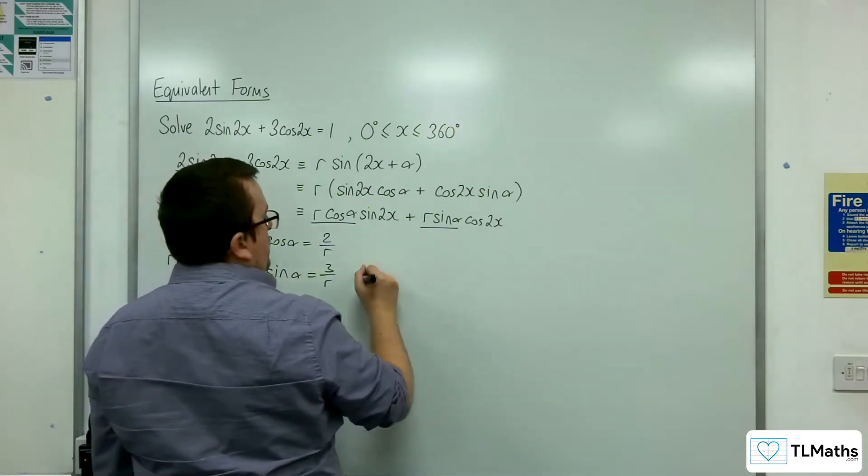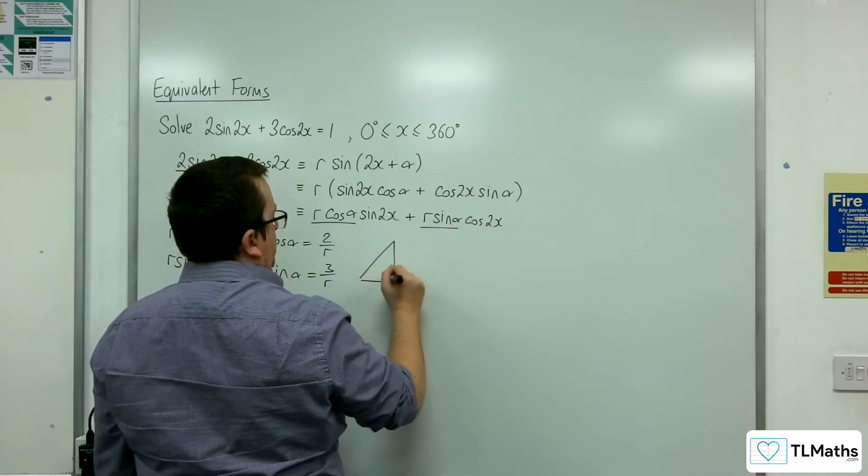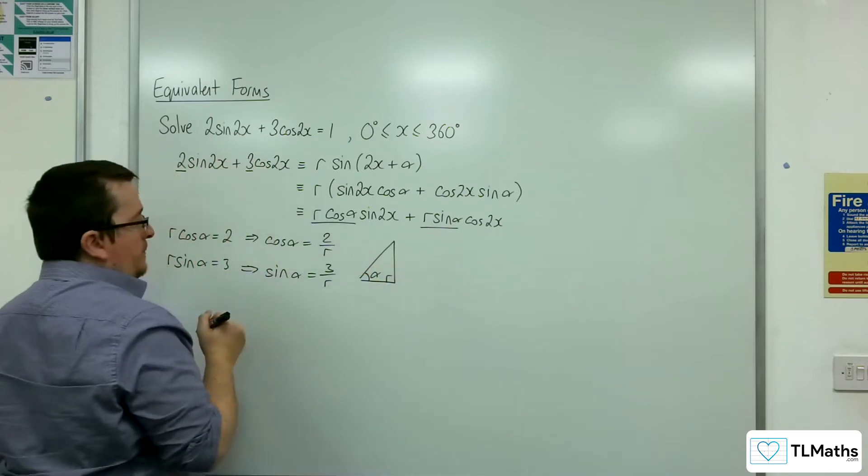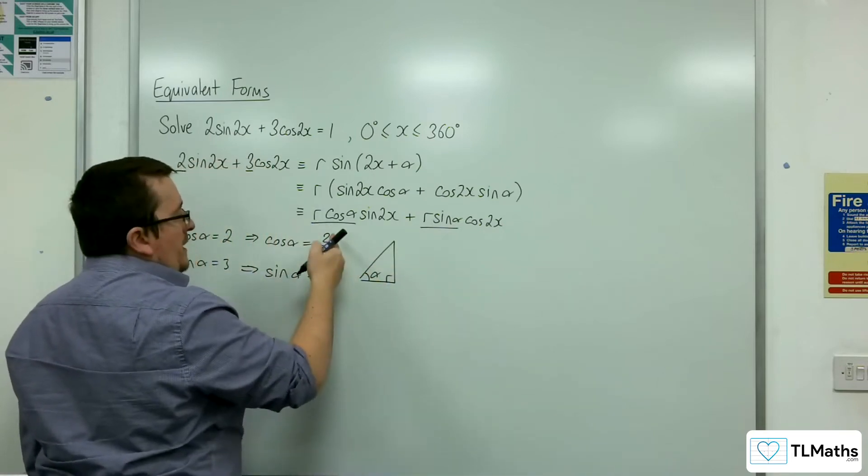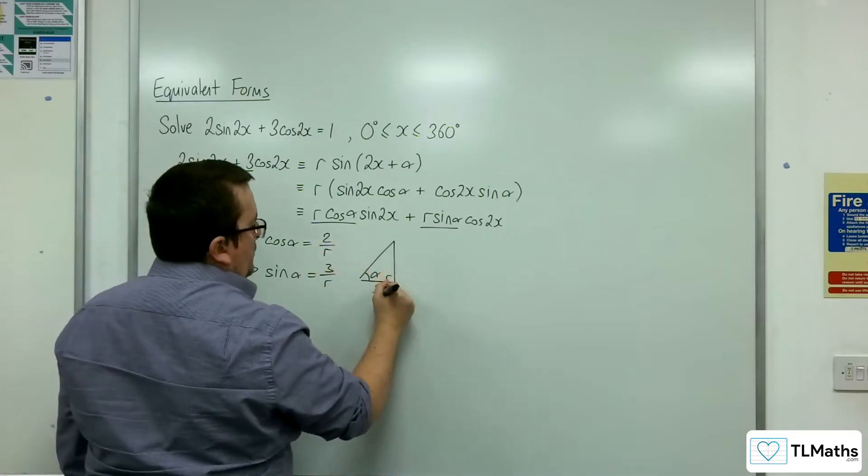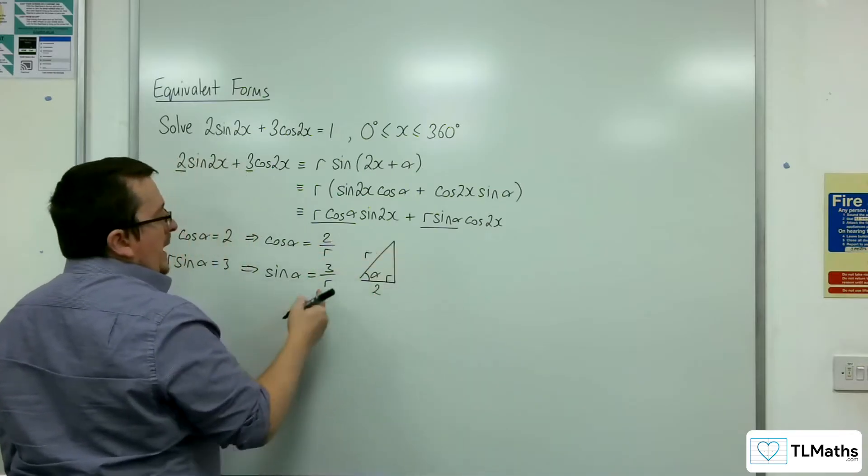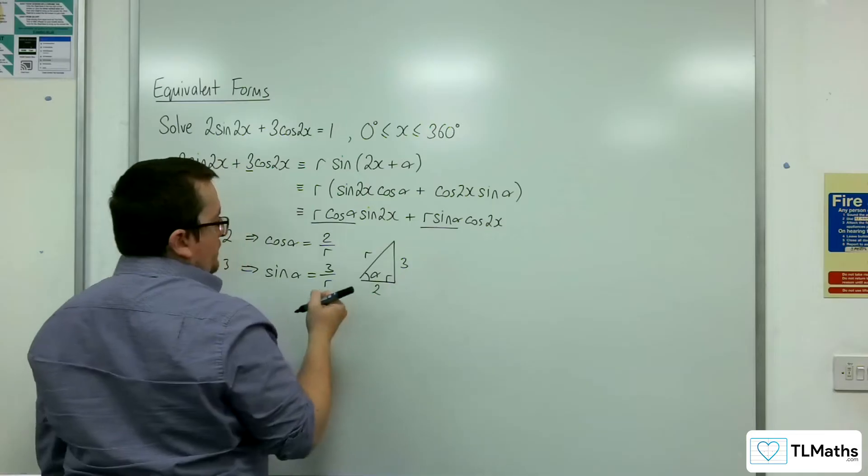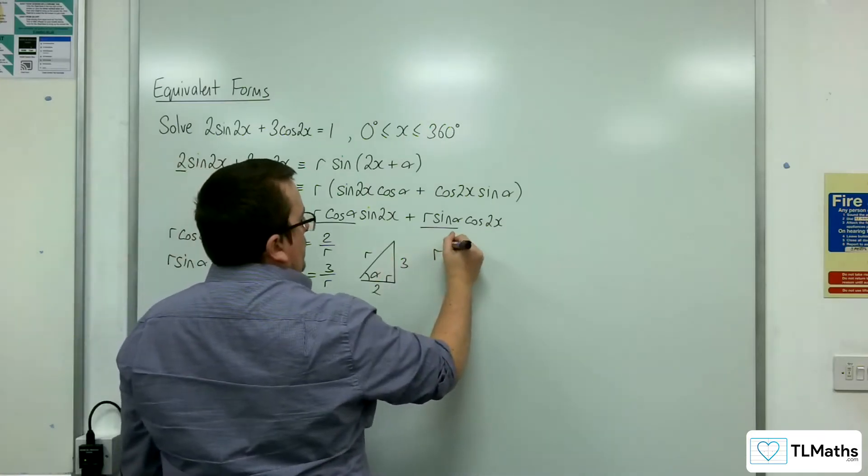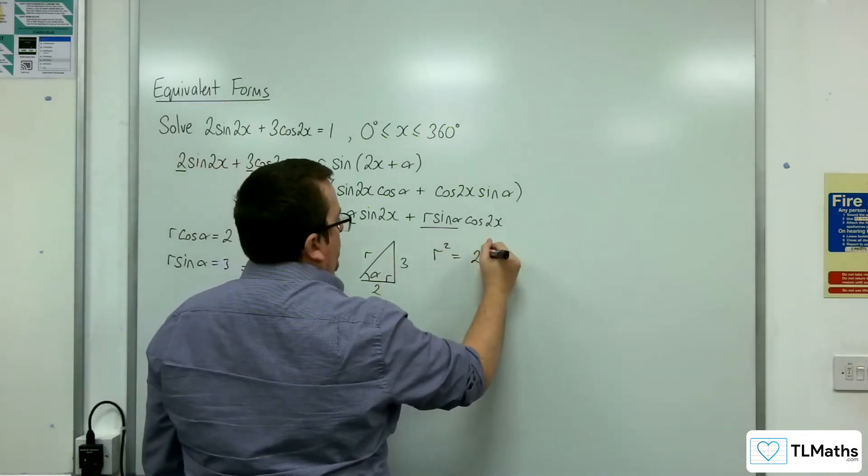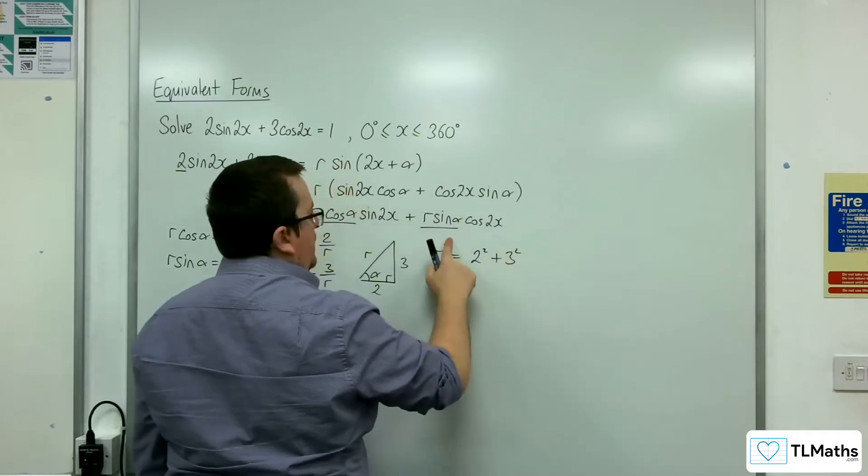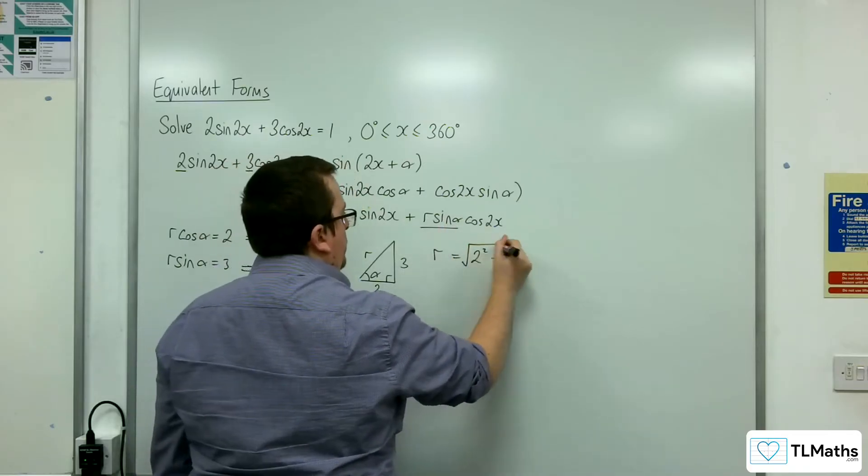There's my alpha. Cosine of alpha is adjacent over hypotenuse, so 2 over r, and the opposite side must be 3. So r² equals 2² plus 3². r is the square root of this, that's 4 plus 9, so root 13.